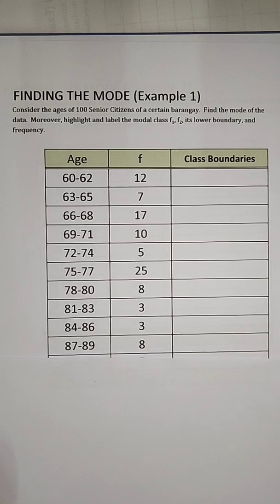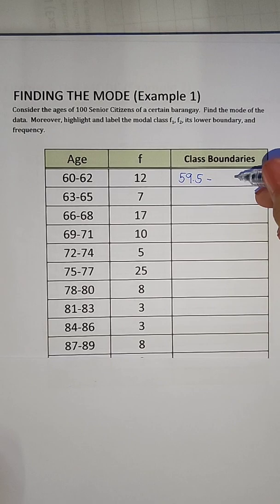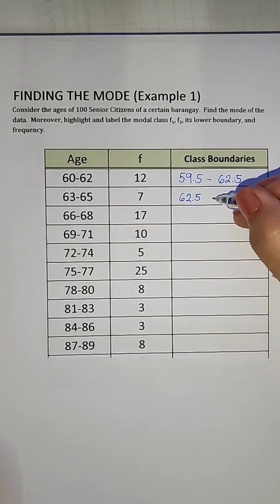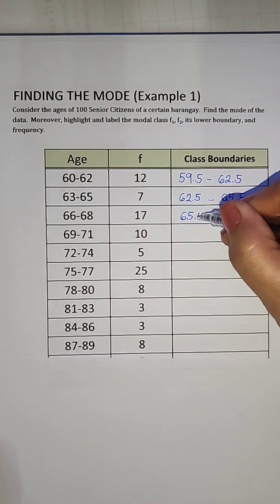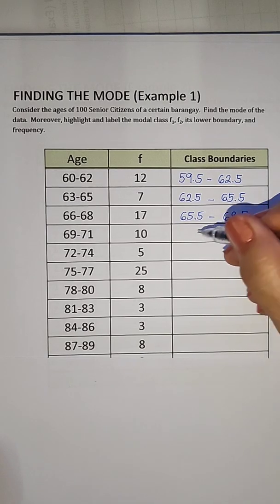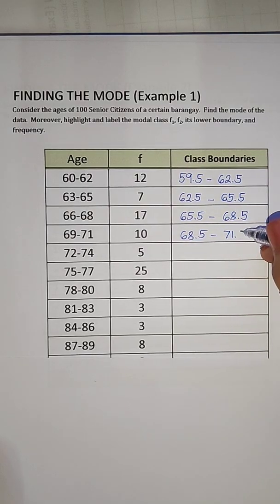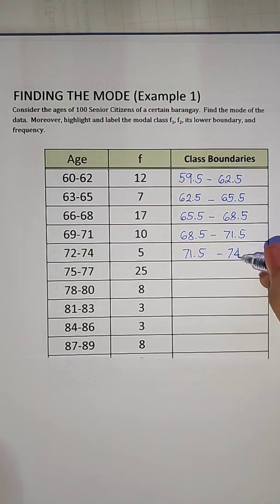The first class boundary would be 59.5 and the upper boundary would be 62.5. So we copy the upper boundary, now we have 65.5 and then 68.5, 68.5 to 71.5, 71.5 to 74.5, 74.5 to 77.5.